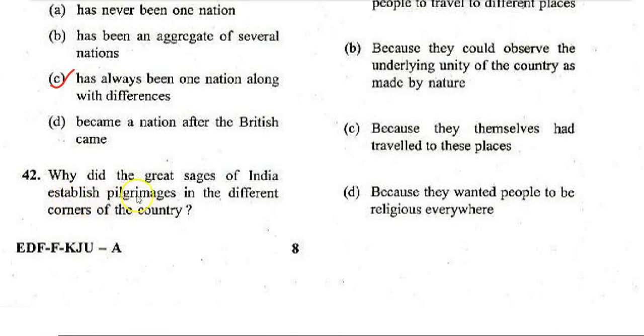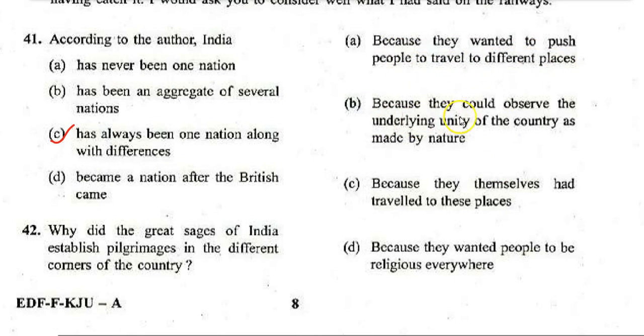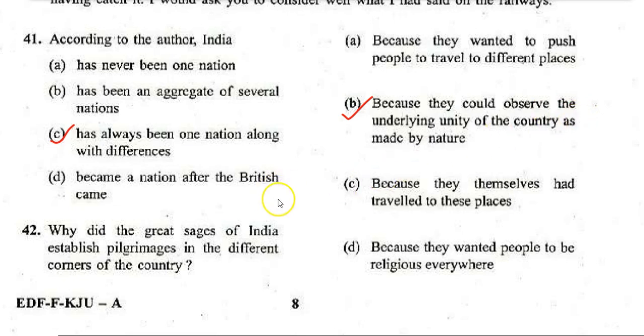Next comprehension question: Why did the great saints of India establish pilgrimages in different corners of the country? Options: A. They wanted people to travel to different places, B. They could observe the underlying unity of the country as made by nature, C. They themselves had traveled to these places, D. They wanted people to put up temples everywhere. The correct answer is B.